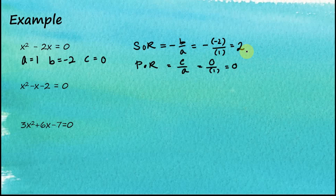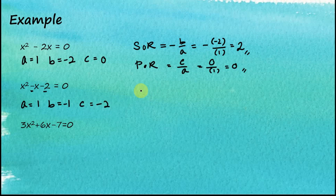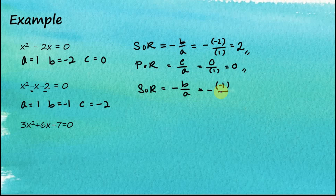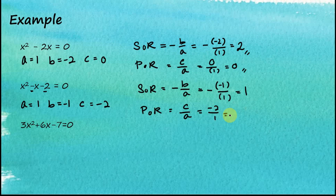For the second equation: a equals 1, b equals negative 1, and c equals negative 2. The sum of roots equals negative b over a, which is negative of negative 1 over 1, equal to 1. The product of roots equals c over a, which is negative 2 over 1, equal to negative 2.